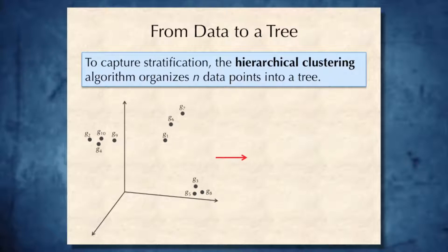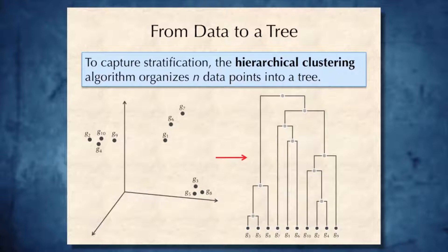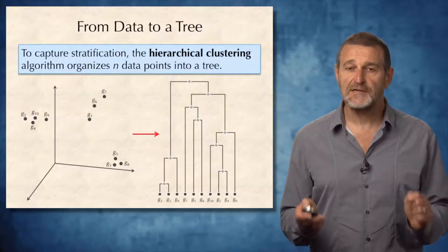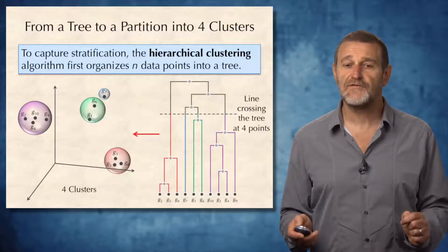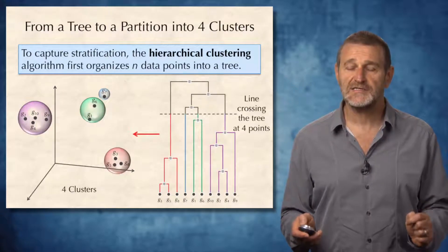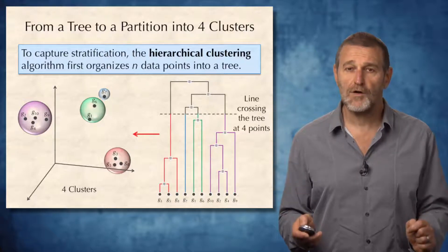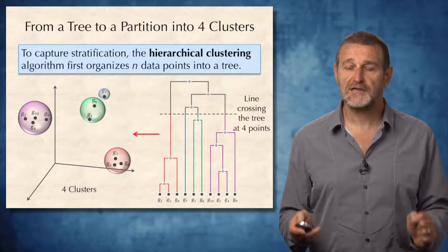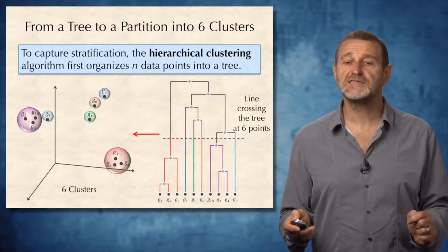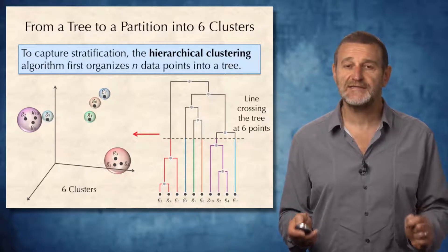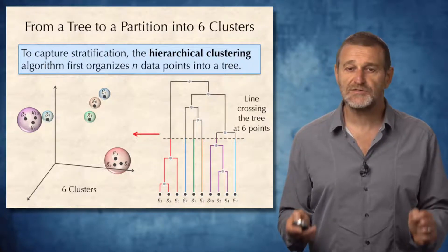To capture this stratification, biologists construct trees where every leaf corresponds to a data point. Every horizontal line crossing this tree will result in a set of clusters. For example, this line crossing the tree at four points will result in four clusters, while the line crossing the tree at six points will correspond to six clusters.